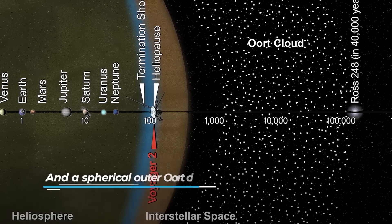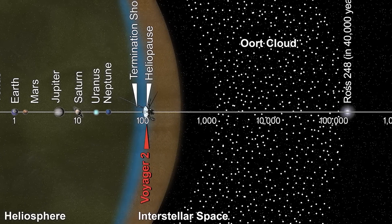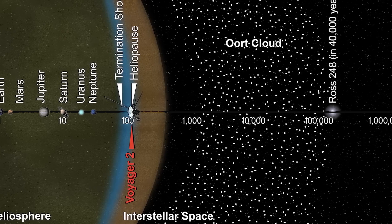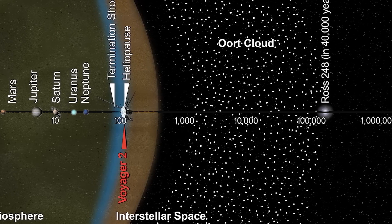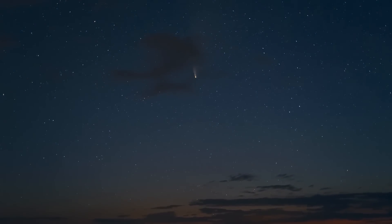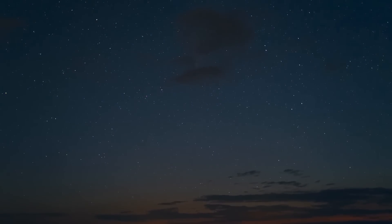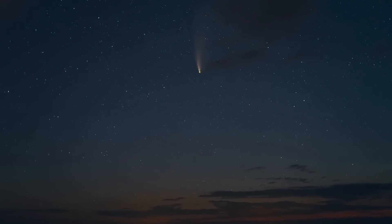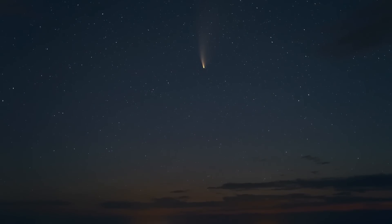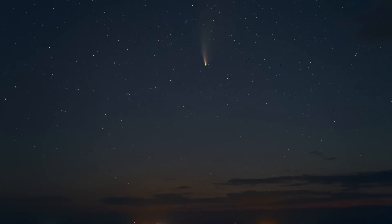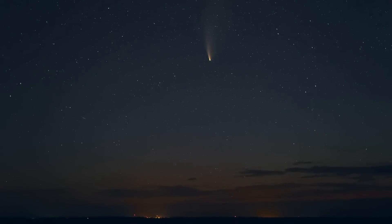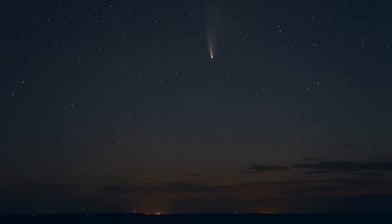Astronomers conjecture that the matter composing the Oort cloud formed closer to the sun and was scattered far into space by gravitational effects of the giant planets early in the solar system's evolution. It's notable that, although no confirmed direct observations of the Oort cloud have been made, it may be the source that replenishes most long-period and Halley-type comets entering the inner solar system and many of the centaurs and Jupiter family comets as well.